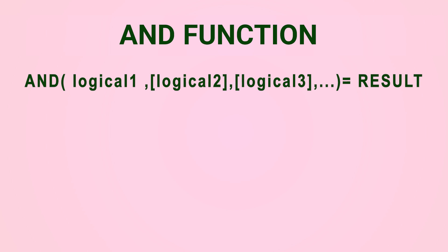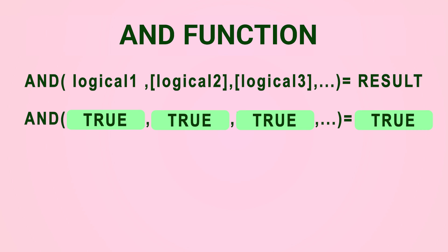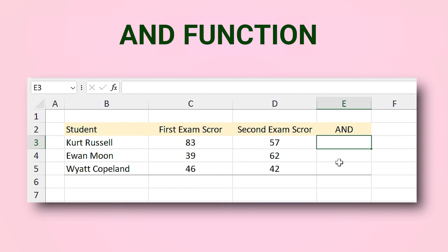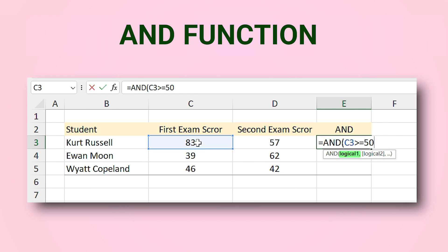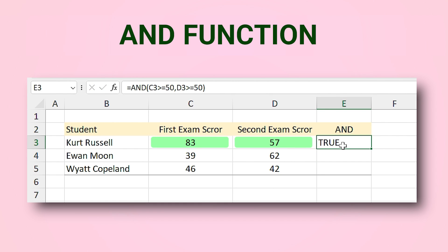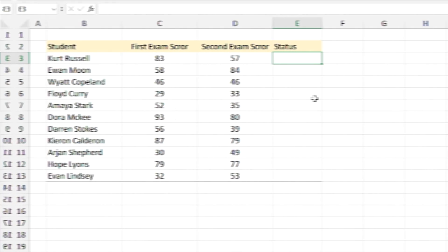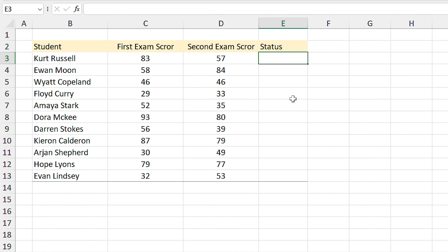The AND function compares all the logical conditions: if all of them are true it returns TRUE, but even if one of the conditions is false it returns FALSE. For example, I type 'equals AND', if the first exam score is greater than or equal to 50, comma, and the second exam score is greater than or equal to 50. Press Enter — you get TRUE because both are greater than 50. But if one of them or both are less than 50 you get FALSE.